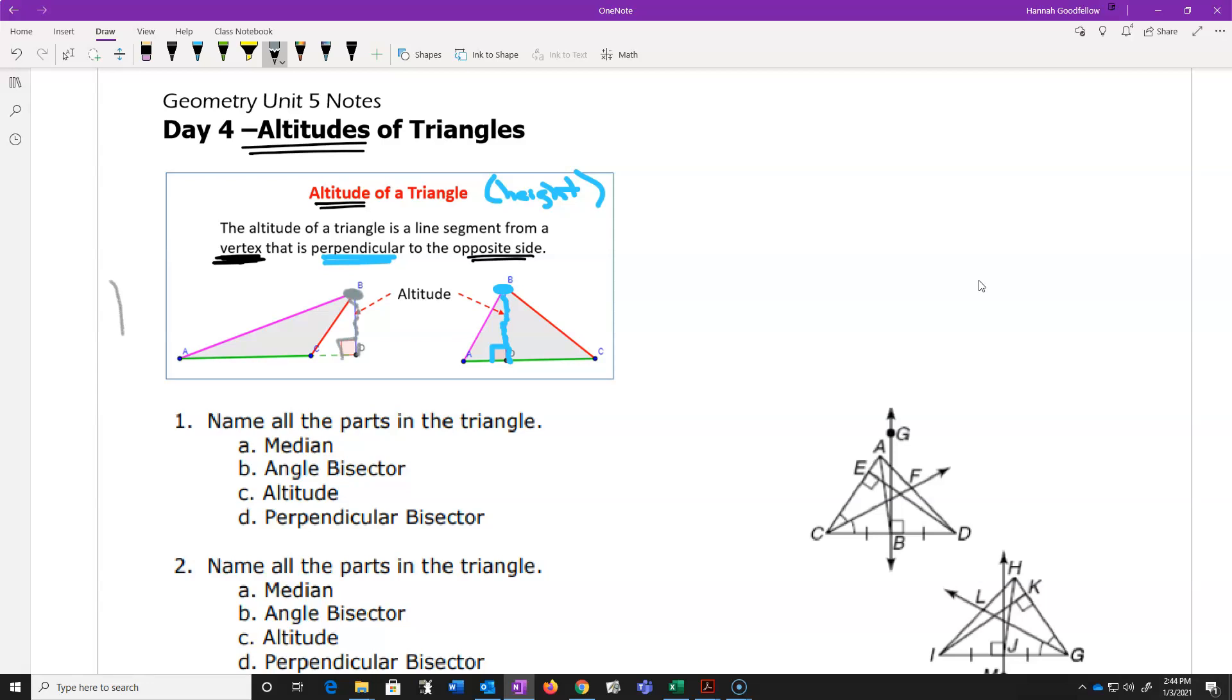If the triangle is a right triangle, then the actual altitude is a side of the triangle.